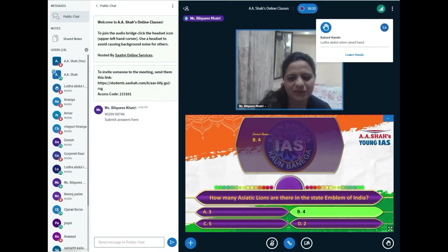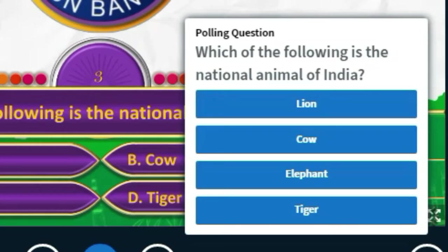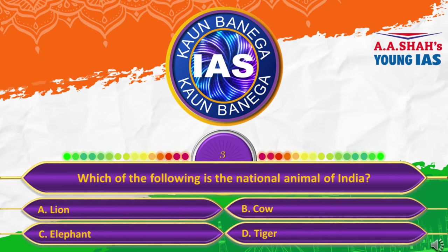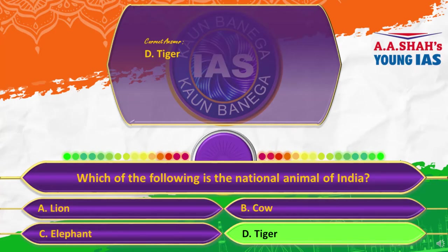Let's go to the third question: Which of the following is the national animal of India? A, lion; B, cow; C, elephant; or D, tiger? The correct answer is D, tiger.